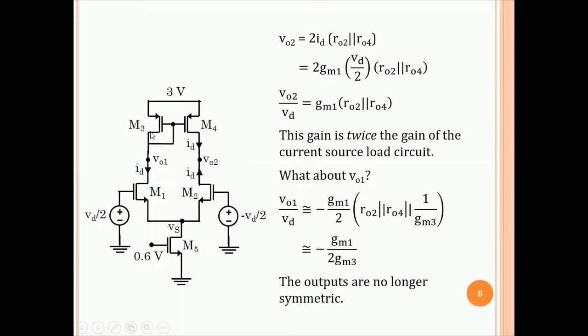What about VO1? VO1, of course, will have a different gain. And we say, at VO1, we can write, if we assume that the source node is at ground, and that's an assumption, with that assumption, we can say, just looking at the left-hand side circuit, that the gain will be VO1 equal to GmVD by 2 of M1 into the resistance seen at this node. The resistance seen at this node is RO1 parallel, RO3 parallel 1 by Gm3, because this is a diode connected transistor. So, the small signal circuit has 1 by Gm3 parallel RO3.